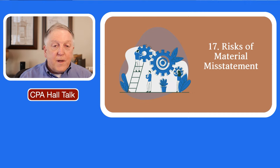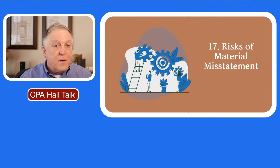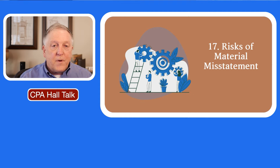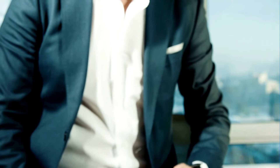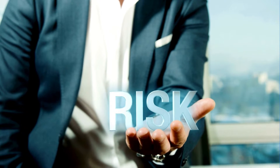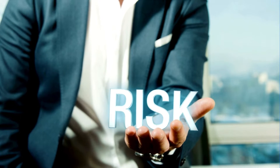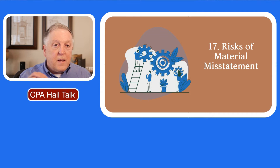In prior videos, we've looked at retrospective reviews of estimates. We've done our walkthroughs of the internal controls, preliminary analytics, and we've asked our questions about whether or not fraud is present. We've done several things in risk assessment to get to a point where we could assess the inherent risk and control risk, and then those two elements make up the risk of material misstatement. You've seen the equation: inherent risk times control risk equals the risk of material misstatement.